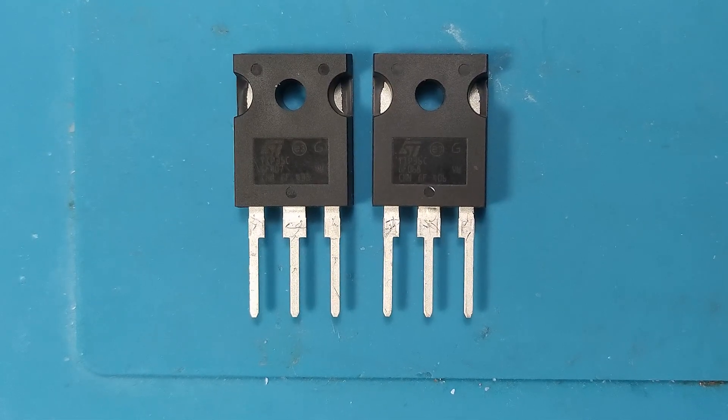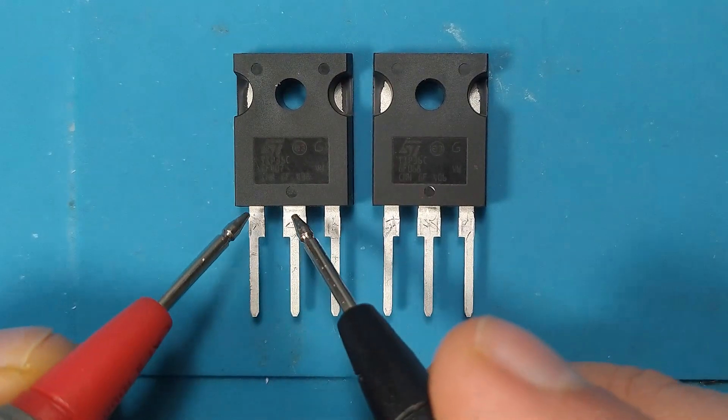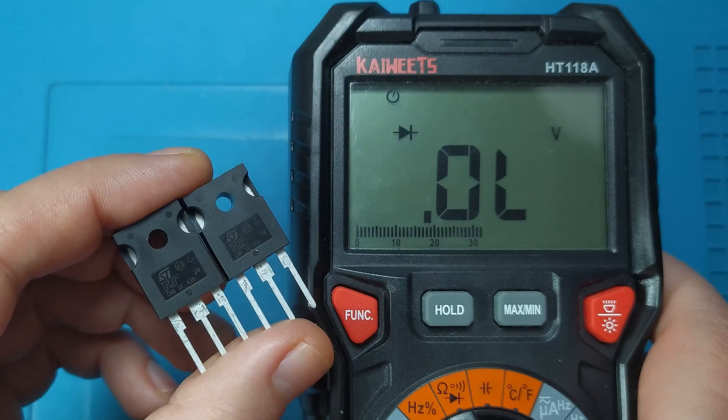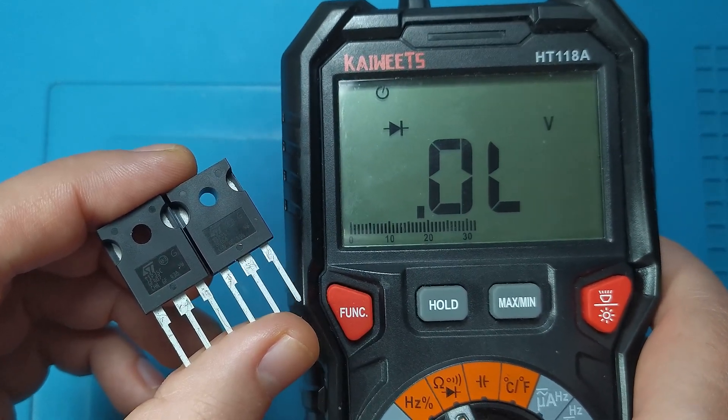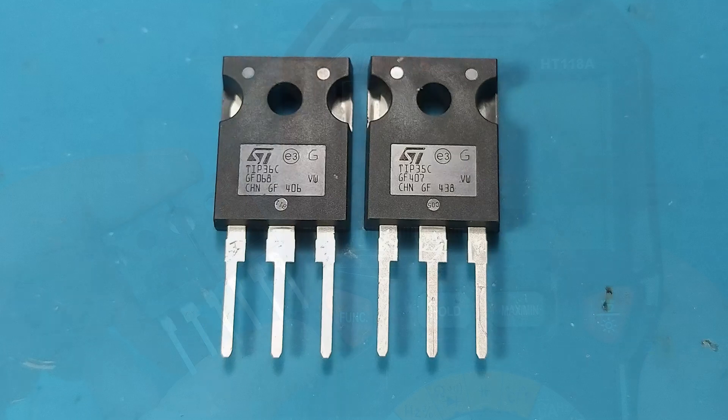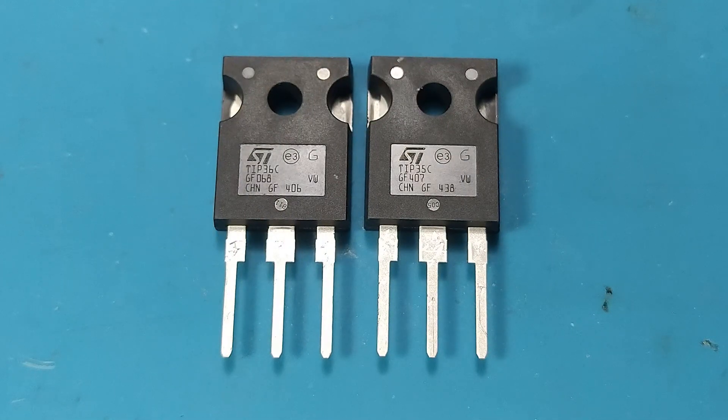Hello and welcome to Electro Tech Tips. In this video I will show you how to measure with a digital multimeter a high power bipolar transistor in the TO247-3 capsule. In our case we will take TIP35C and TIP36C transistors as an example.